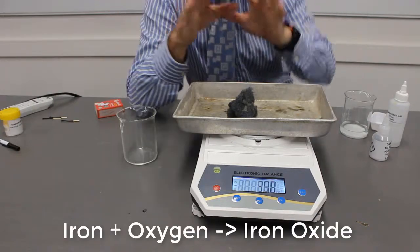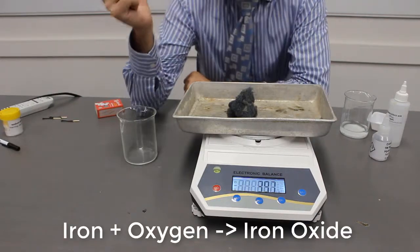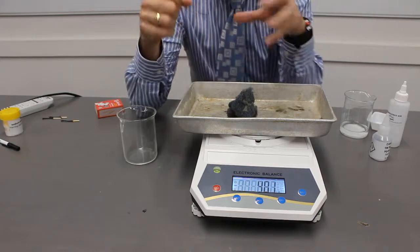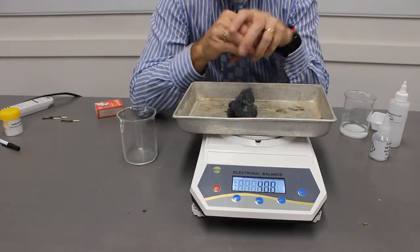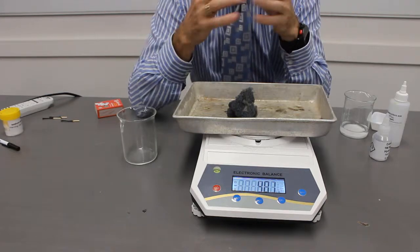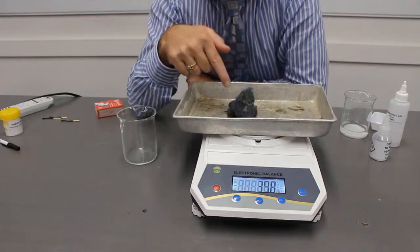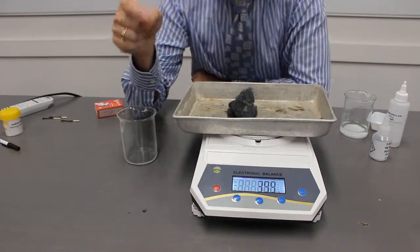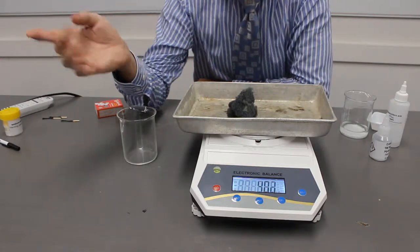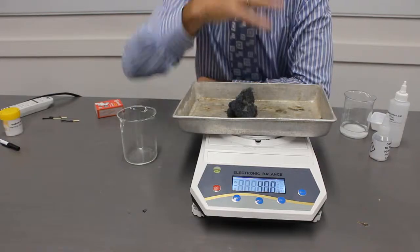Where did this oxygen come from? Well, it came from the air around us. Oxygen atoms have come out of the air and bound to the iron. That's why the mass has increased. Again, it complies with the law of conservation of mass because we can explain why there's an increase in mass. We know where that mass has come from. And it's come from oxygen from all around us.